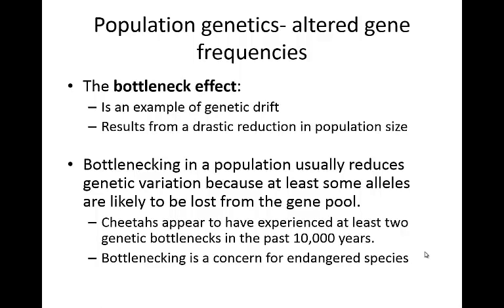The bottleneck effect is an example of genetic drift, and it results from a drastic reduction in population size. Bottlenecking in a population usually reduces genetic variation because at least some alleles are likely to be lost from the gene pool. Cheetahs are probably the classic example — they appear to have experienced at least two genetic bottlenecks in the last 10,000 years. This is a real concern for endangered species, as a population that gets low enough may simply lose genetic variation just by chance.